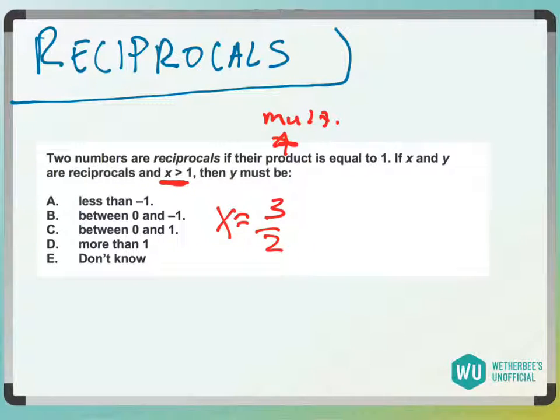So if I want the product to be equal to 1, I multiply by... and again, the reciprocal - so the reciprocal is I'm going to flip that, three halves becomes two thirds.